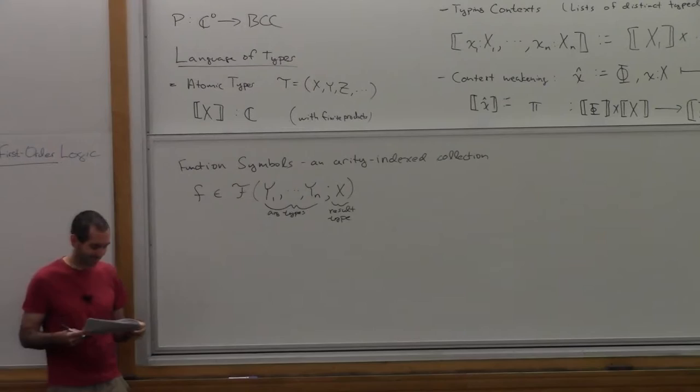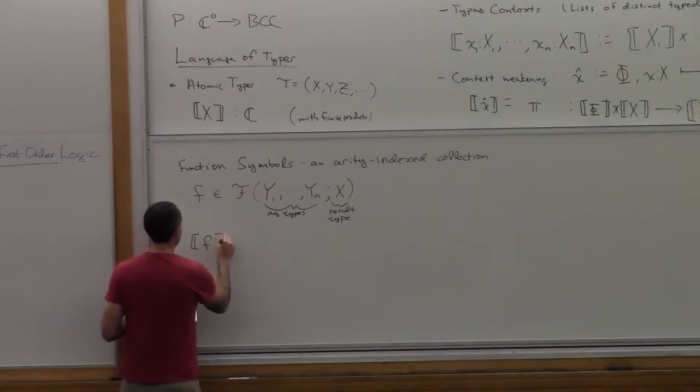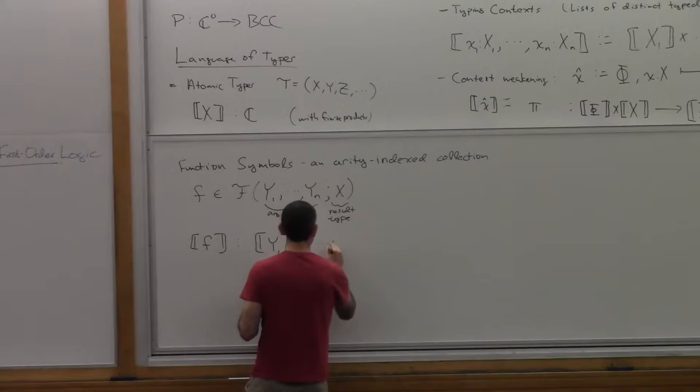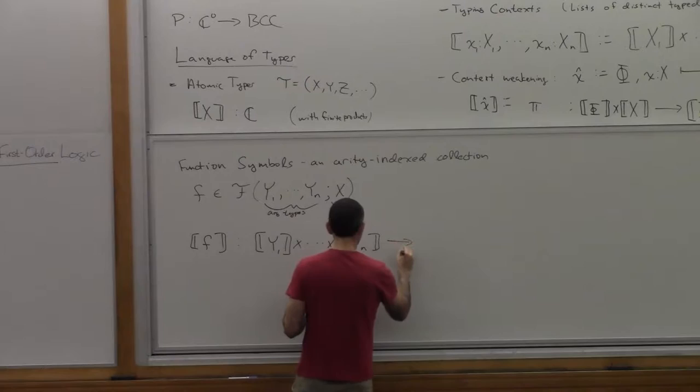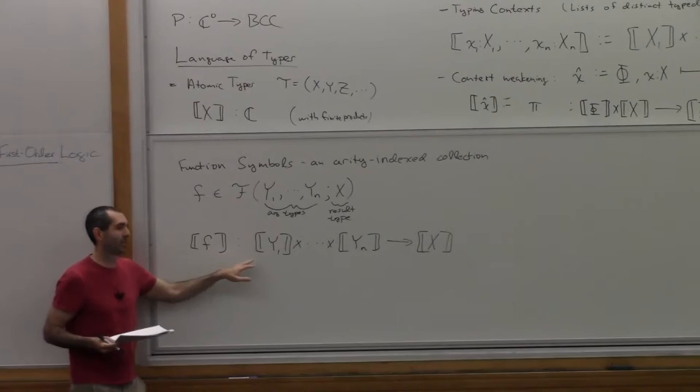So we interpret context weakening as a map that goes from the interpretation of the extended context — which is the product of the interpretation of the prefix and the interpretation of x — to the interpretation of the context prefix. What term should this be? Pi zero. It's just the projection — the structural map that goes from the product to one of the factors.